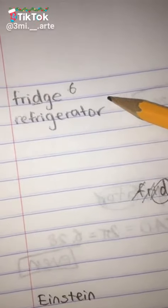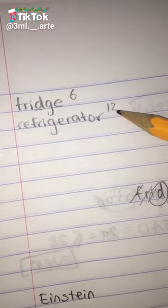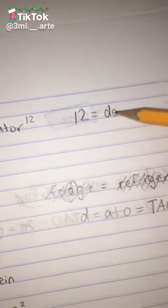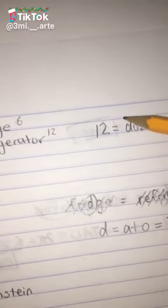And refrigerator has 12 letters in it. That is also an even number. Now, the thing about 12 is that it also means dozen in English. I don't know why, but that's just what that is.